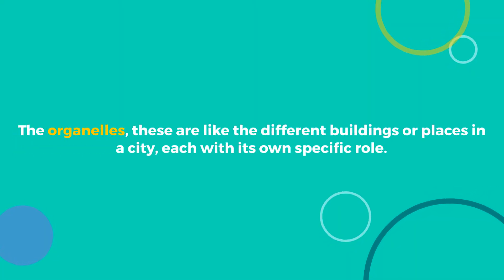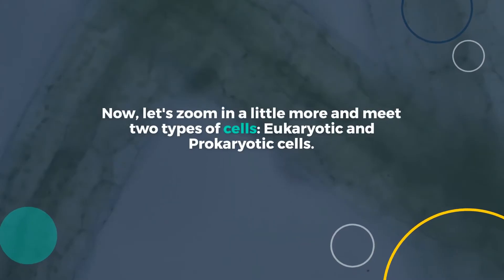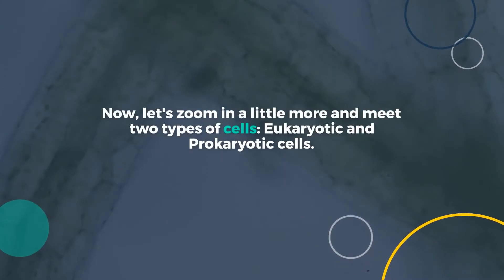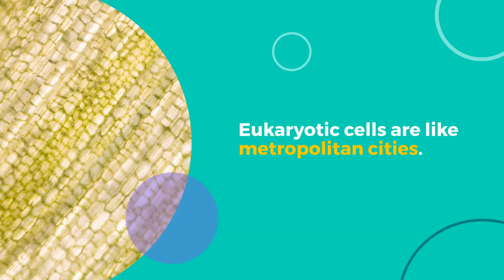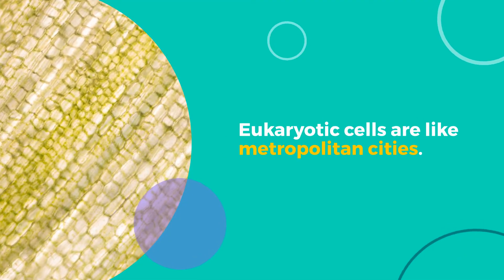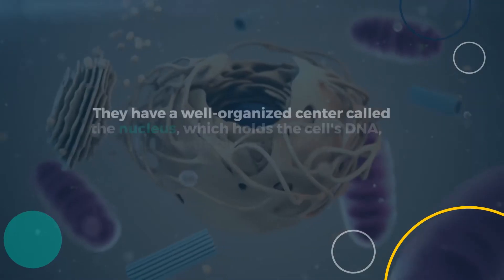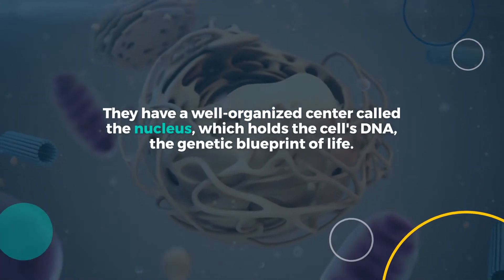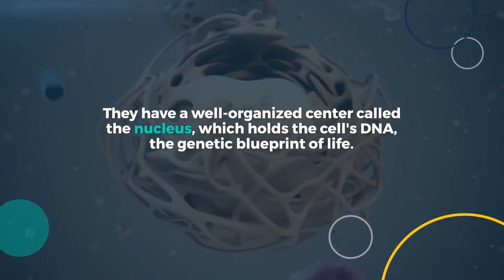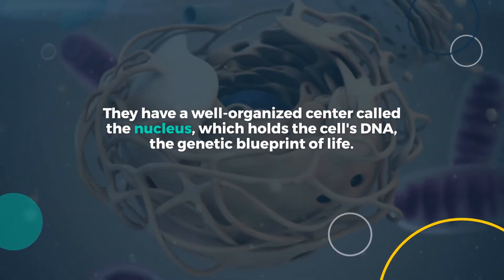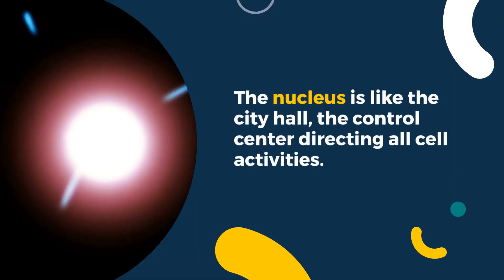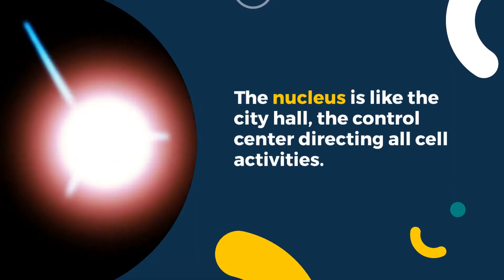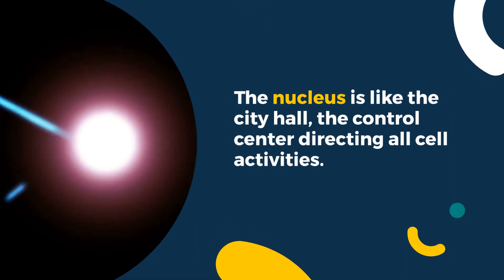Now let's zoom in a little more and meet two types of cells: eukaryotic and prokaryotic cells. Eukaryotic cells are like metropolitan cities — they have a well-organized center called the nucleus, which holds the cell's DNA, the genetic blueprint of life. The nucleus is like the city hall, the control center directing all cell activities.